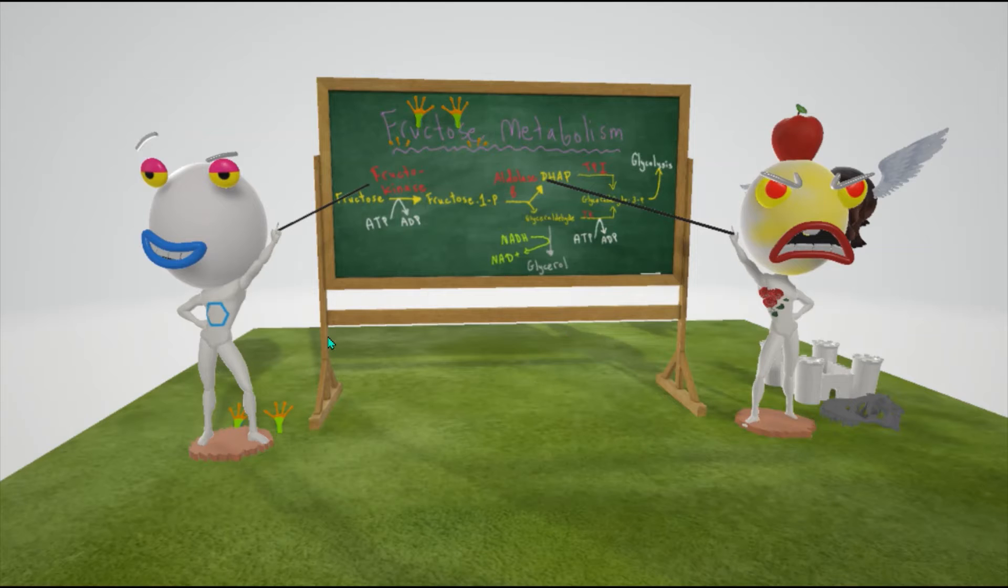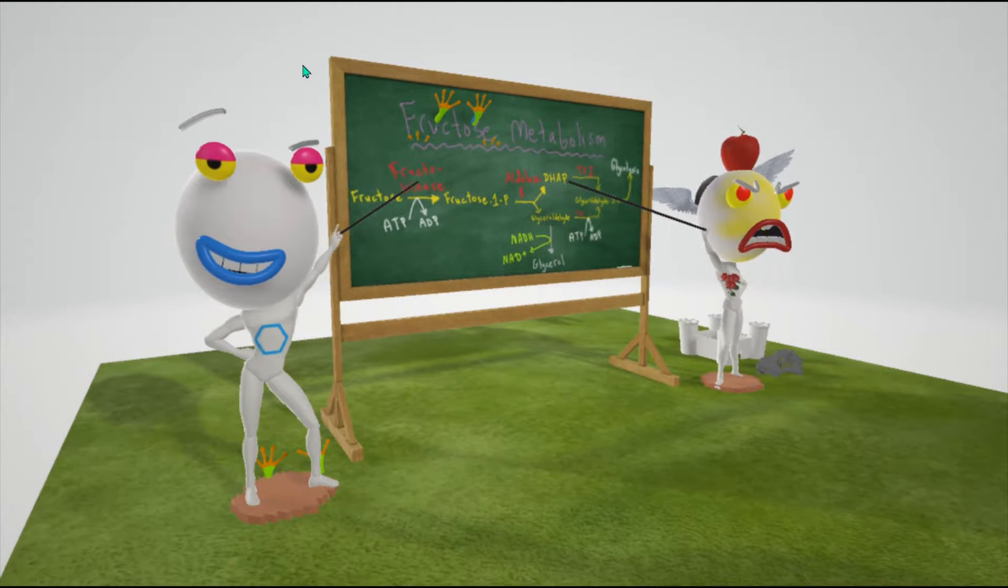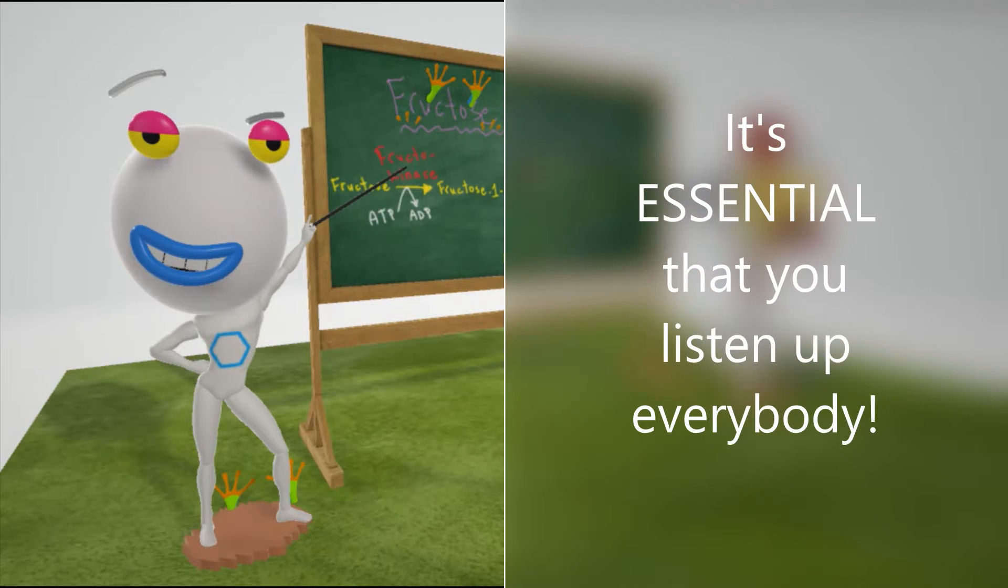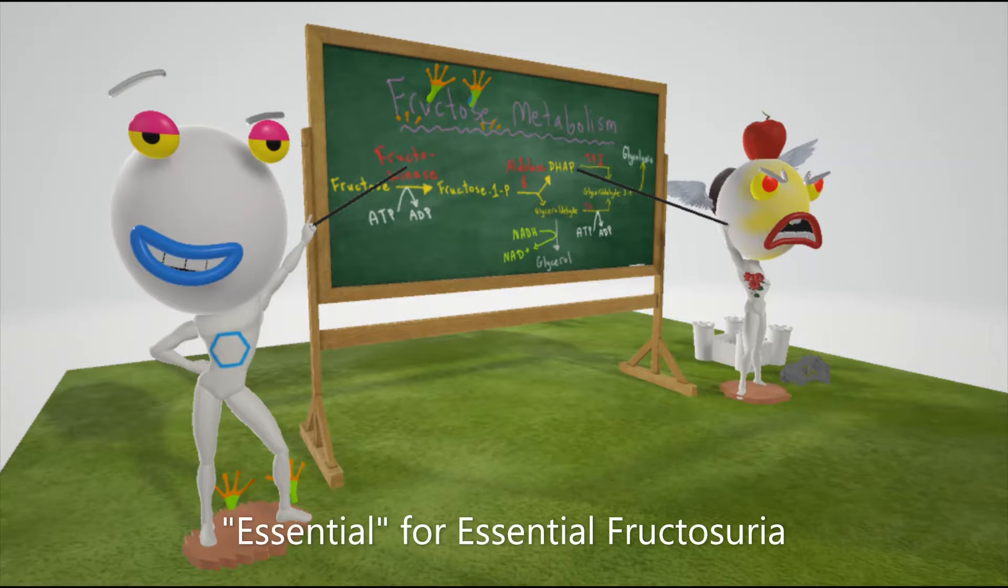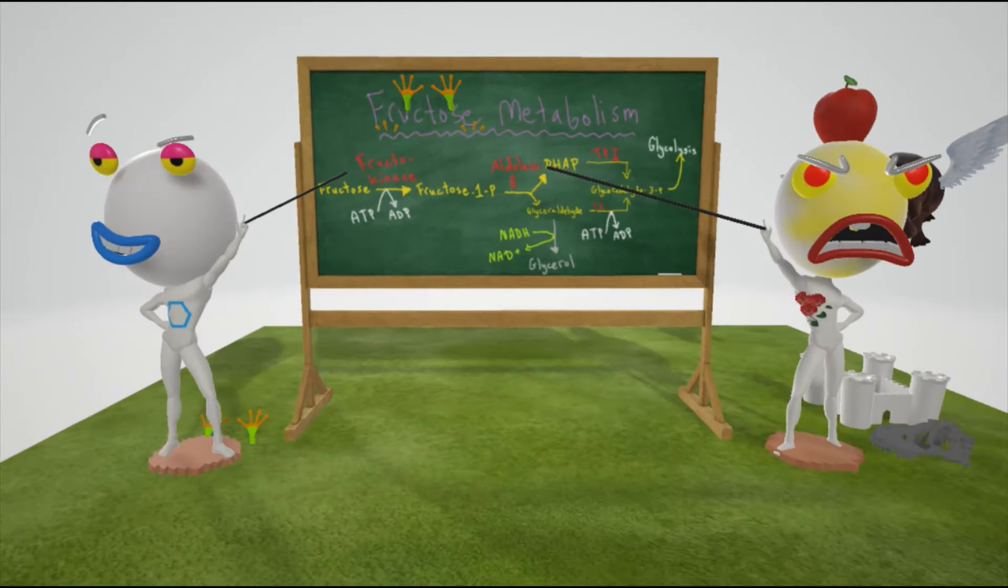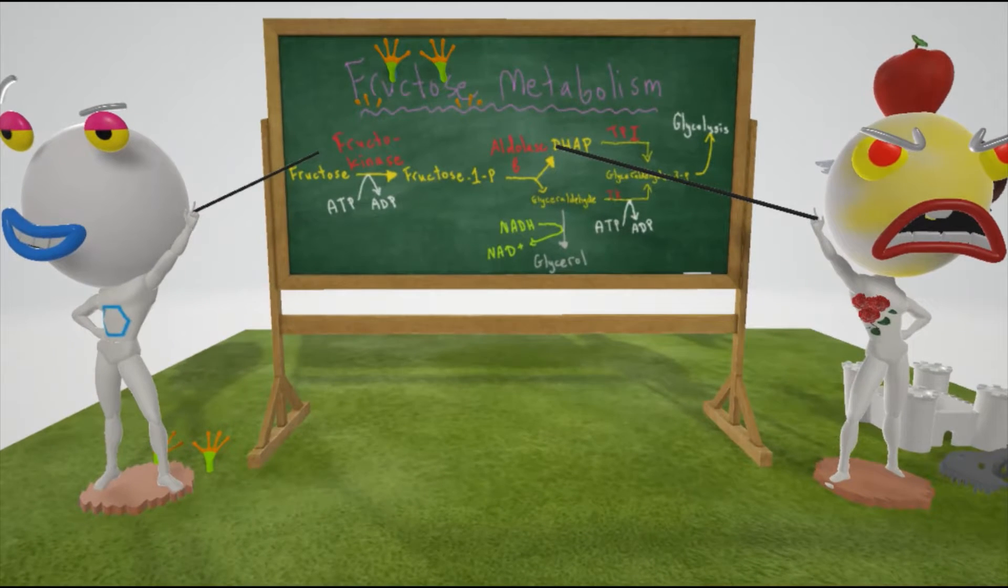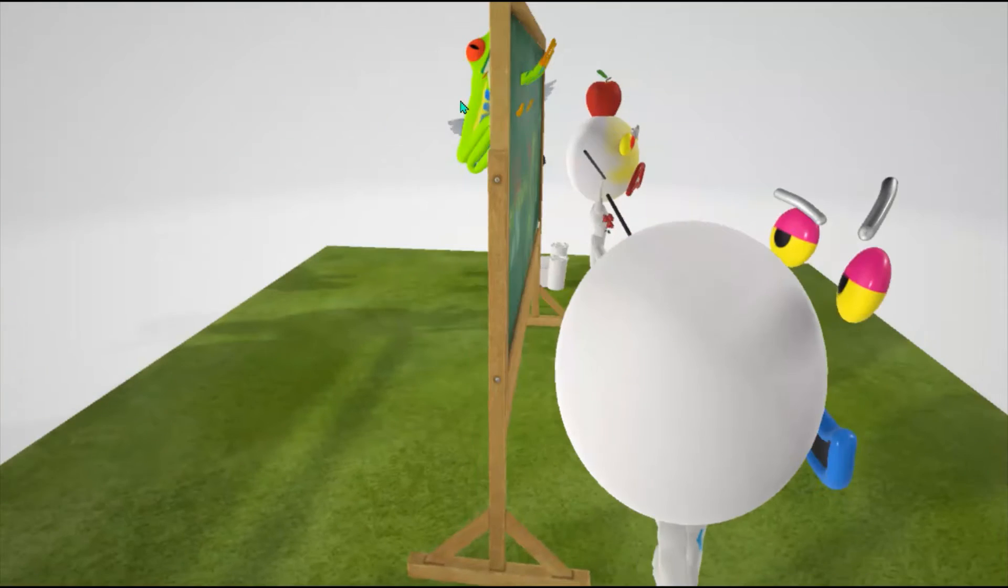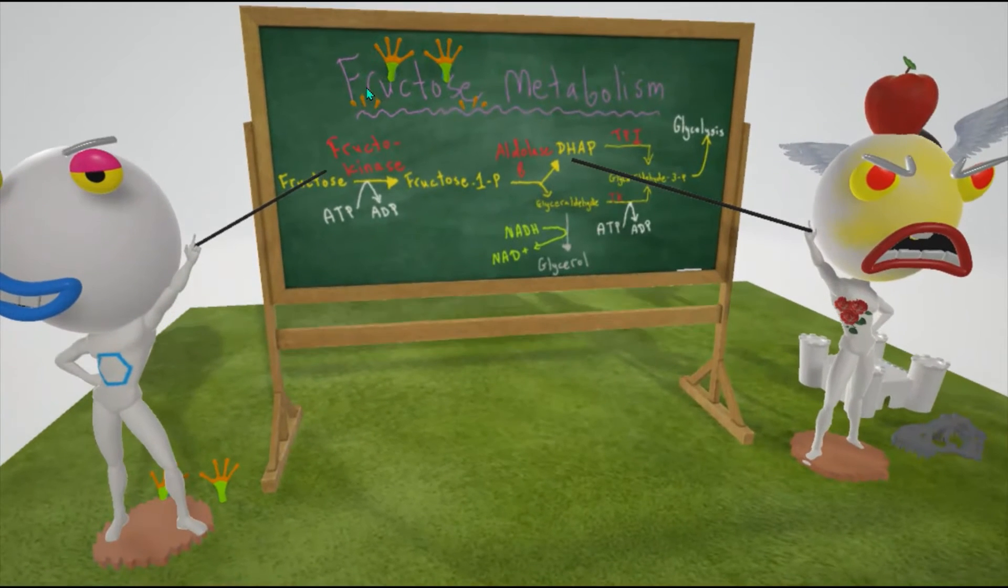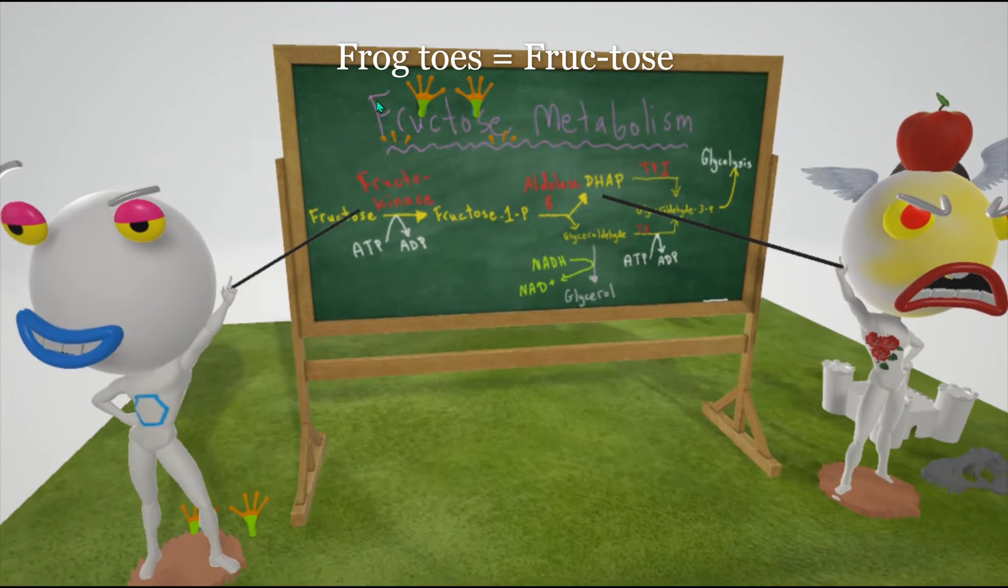We're talking about essential fructosuria, represented by this teacher who sang to the class, "It's essential that you listen up, everybody." Essential is going to be for essential fructosuria. On the board over here, we have a picture of fructose metabolism, and you might have noticed that there's a frog sticking through the board. The frog toes are sticking out. That's to remember fructose. Frog toes for fructose.